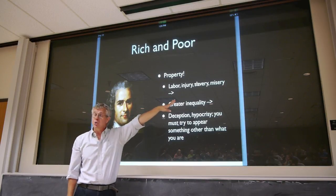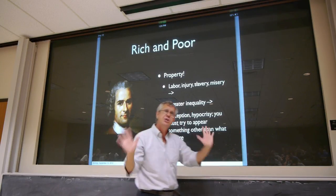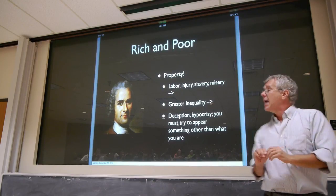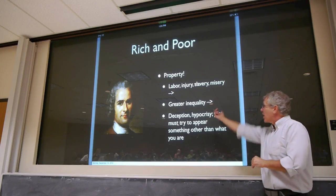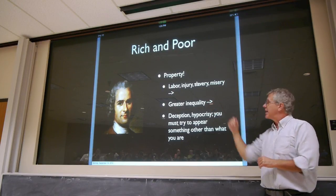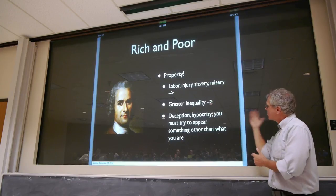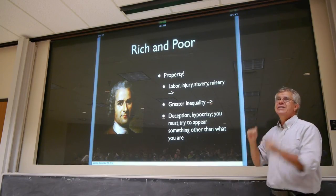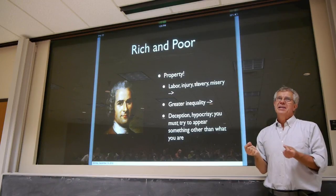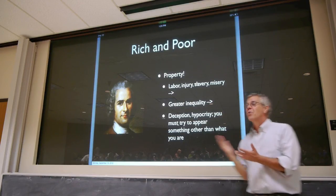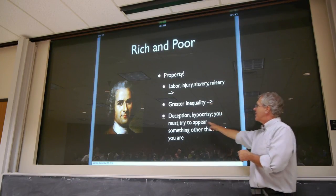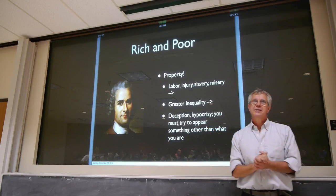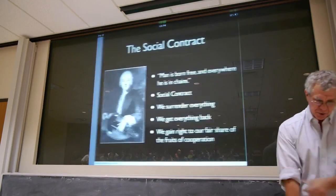We mentioned that when we were talking about Marx. His idea is that this is the key to great inequality. We end up in a situation where a few are gorging themselves on luxuries while the multitude lack necessities. Not only do we find a situation of great injustice and inequality, but also human nature itself gets corrupted. We start trying to deceive people into thinking we're one of the masters rather than one of the slaves.